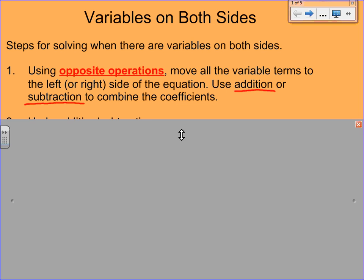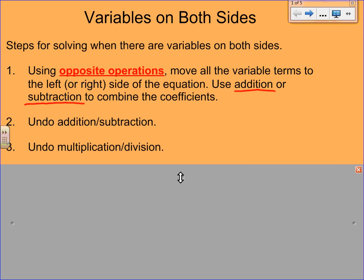After you do that, it should look like a regular old two-step equation. And those steps are going to be the same as what we looked at a few videos ago. So step two is to undo the addition and subtraction. And step three is to undo multiplication and division. Let's get started with some examples.